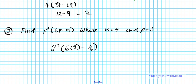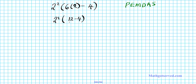We have parenthesis, multiplication and subtraction inside the parenthesis, and we have an exponent. Using please excuse my dear Aunt Sally: we resolve the parenthesis first. Inside the parenthesis we have 6 times 2 minus 4. Multiplication has a higher order than subtraction, so 6 times 2 is 12, minus 4. So we have 2 squared times (12 − 4), which is 2 squared times 8.